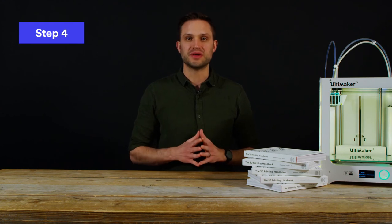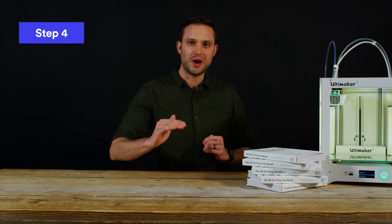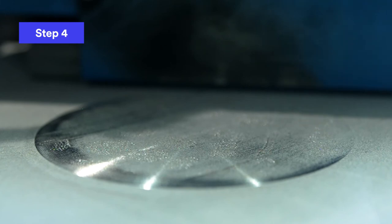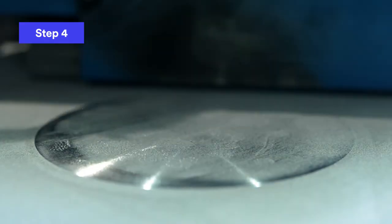Finally, when the scanning of the first layer is complete, the build platform moves down one layer height, and the re-coating blade spreads a fresh layer of powder over the previously printed layer.